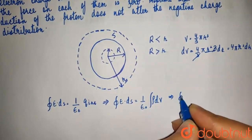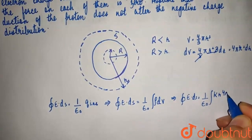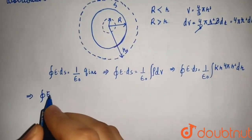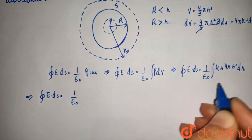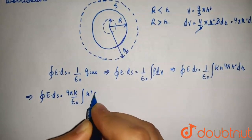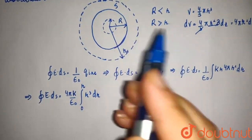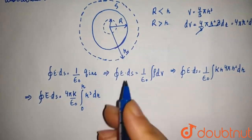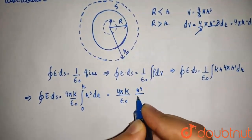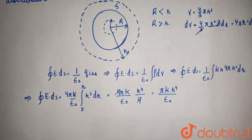So the integral of E dot dS equals 1 over epsilon naught times the integral of kr times 4 pi r squared dr. Taking the constants out, we get 4 pi k over epsilon naught times the integral of r cubed dr, integrated from 0 to r. After integrating, this gives 4 pi k over epsilon naught times r to the power 4 over 4.